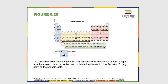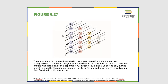For the s and p blocks, the period number equals n. So period 2 gives 2s and 2p, period 3 gives 3s and 3p. For the d block, n is one less than the period: period 4 contains the 3d, period 5 contains the 4d. This is because when n equals 3, l can equal 0, 1, or 2, so a 3d orbital exists — it just happens that 4s is slightly lower in energy than 3d. For the f block, n is two less, but we won't go into that.